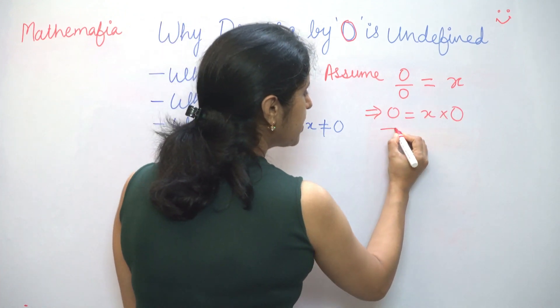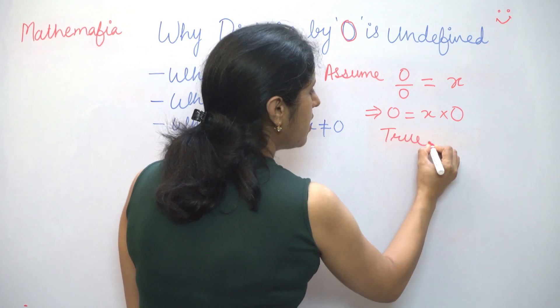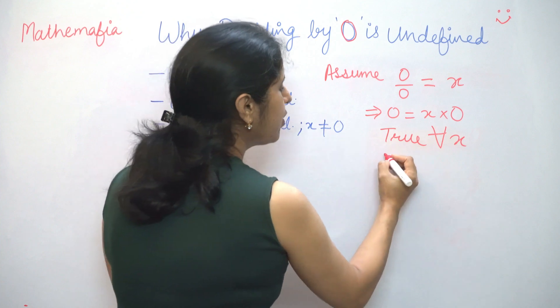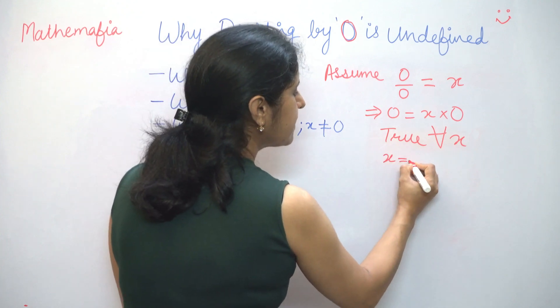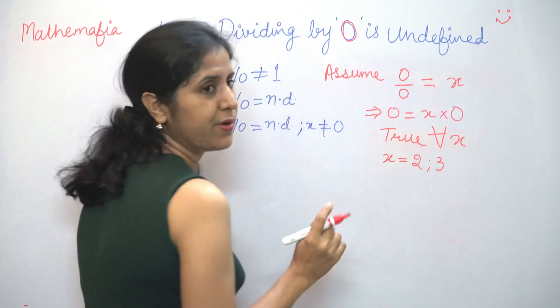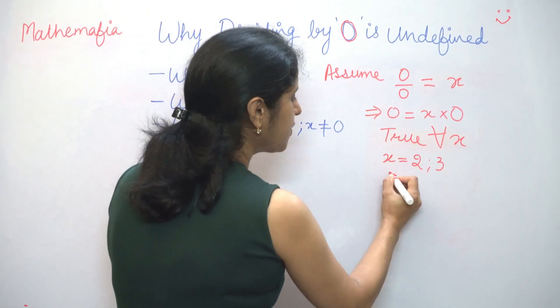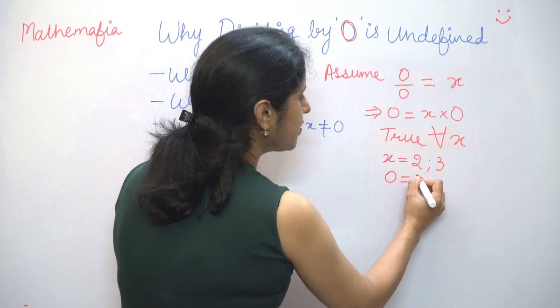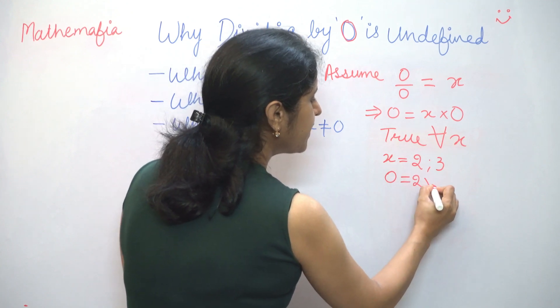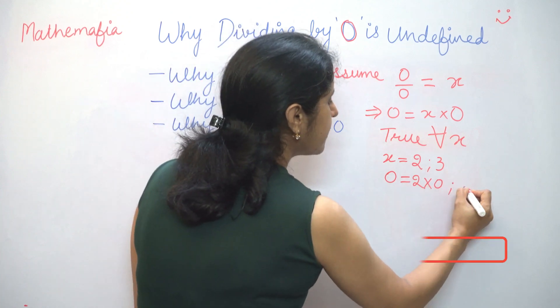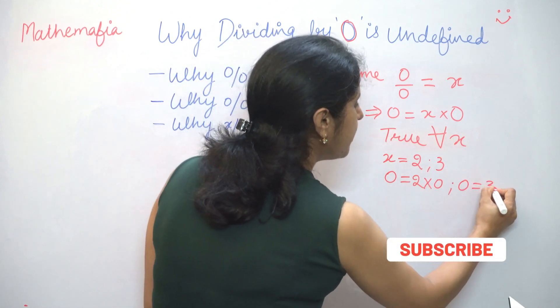So this will imply 0 is equal to x into 0. So this equation is true for all the values of x. Let us take any two values of x, say x is equal to 2 and x is equal to 3. So this equation holds true for x is equal to 2 and 3. So which will mean 0 is equal to 2 into 0. We can see LHS is equal to RHS and similarly 0 is equal to 3 into 0.